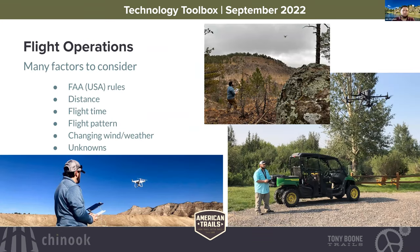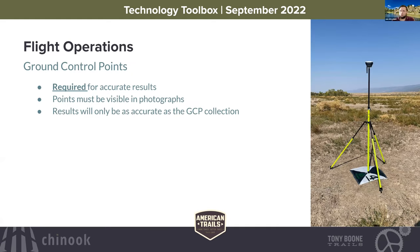When flying, there are lots of things to consider: FAA rules in the US, distance, flight time, how many batteries and flights it will take, what flight pattern you're using, changing wind and weather, and always unknown factors. Ground control points are really, really important — these are points that show up in the photos for which you know the actual accurate coordinates. There are two kinds of accuracy: relative (measuring distance between two points in the model versus real life) and absolute (taking coordinates of a point in the model and comparing to real-world coordinates in a certain projection system). Ground control points are absolutely critical for absolute accuracy.